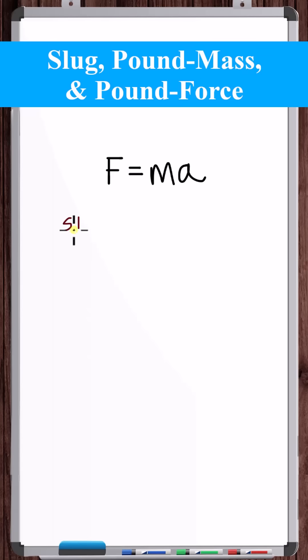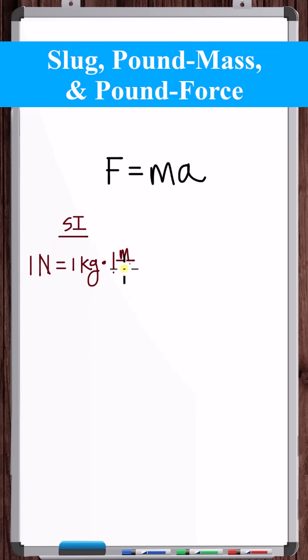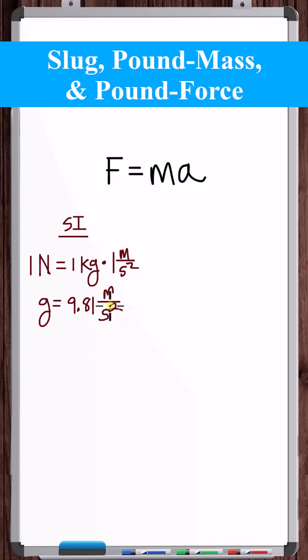In SI units, 1 newton is equal to 1 kilogram times 1 meter per second squared. And the acceleration due to gravity is 9.81 meters per second squared.